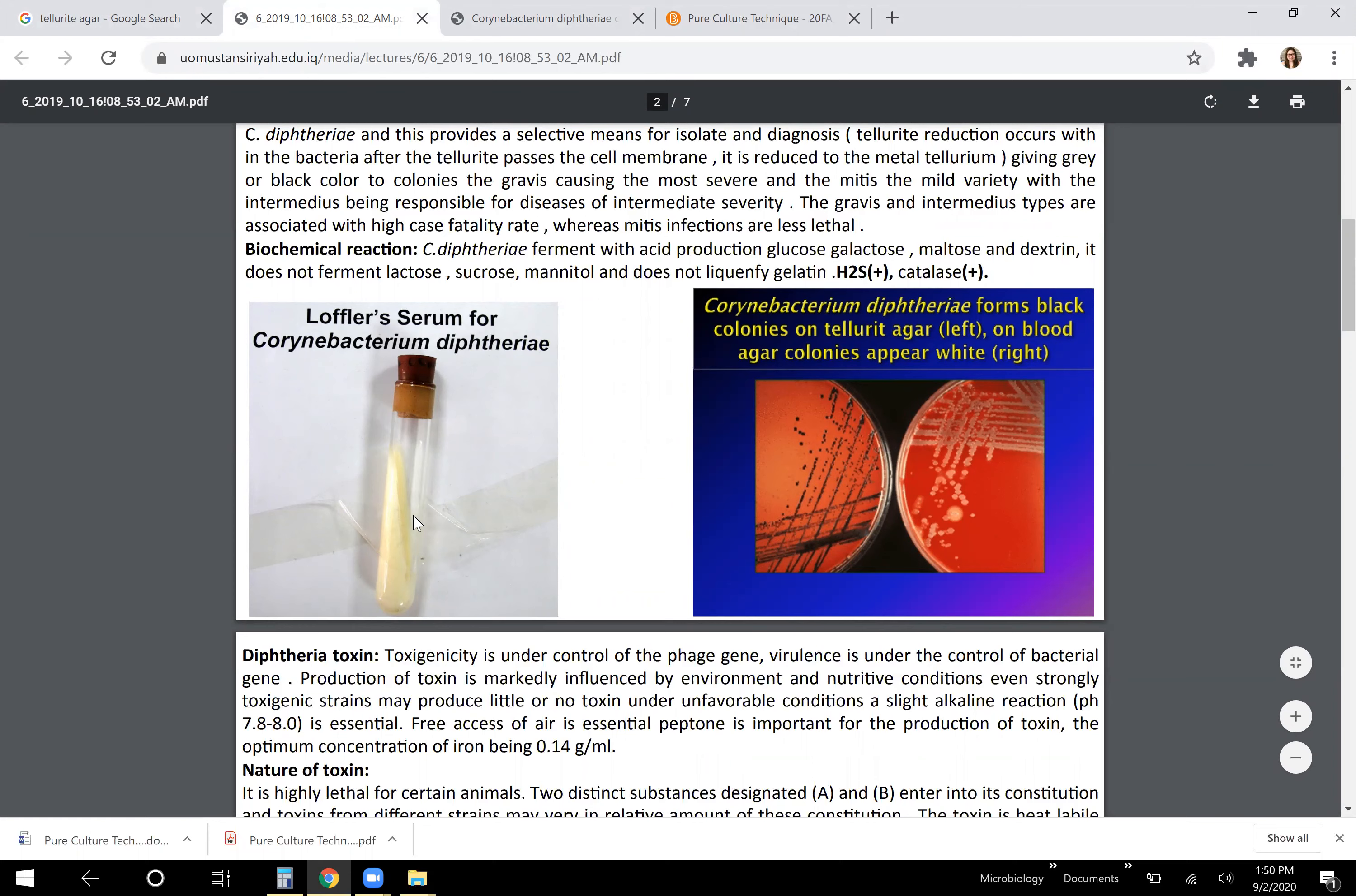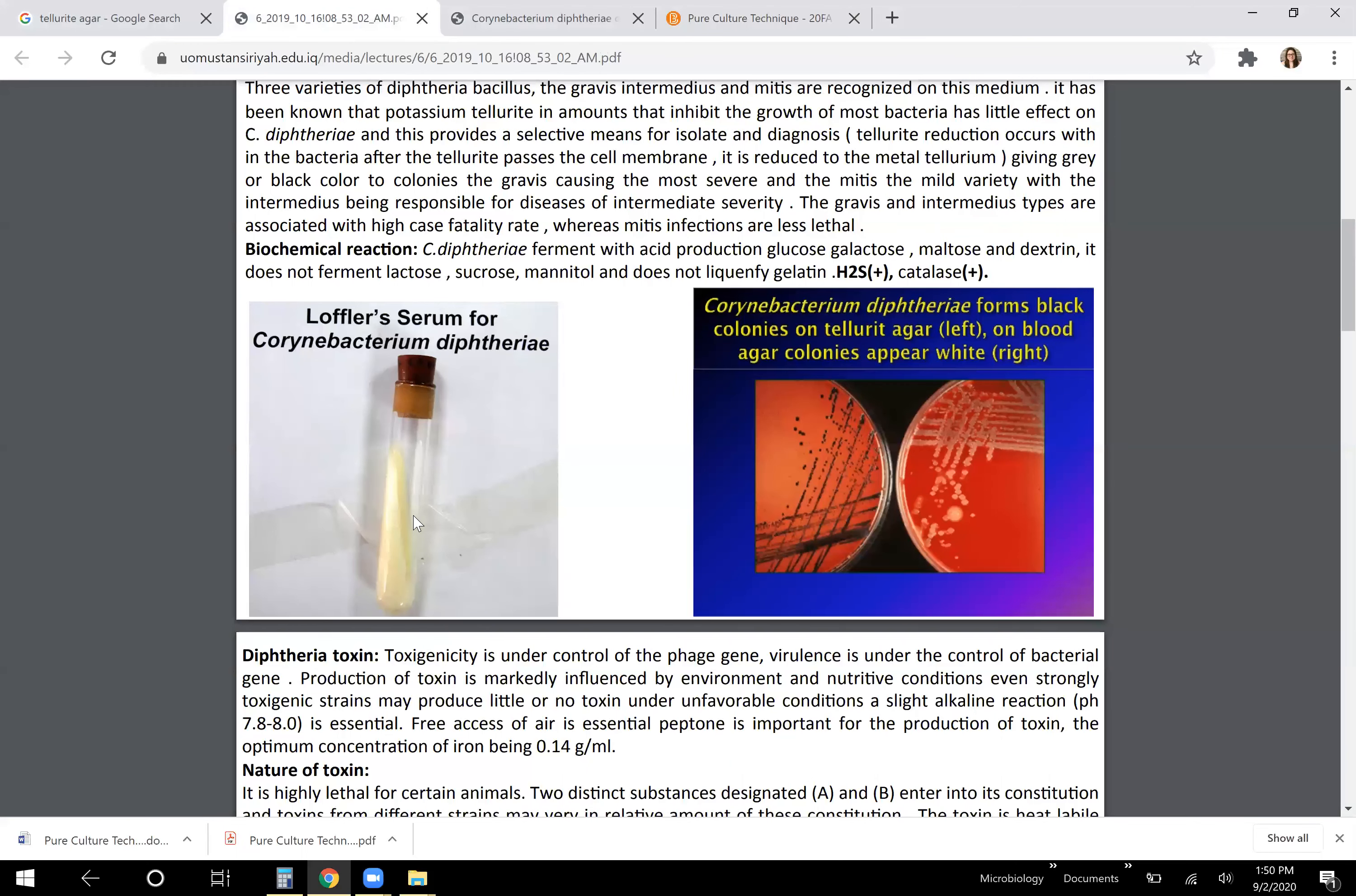And when they say it's selective in that it helps to isolate only the Corynebacterium diphtheriae species, it does so by providing growth conditions where that bacteria will be more likely to contain those granules that are highly characteristic of that species. So then when you make a slide from something that was grown on this media, it will be much easier to tell if those granules are there because there will be more of them.